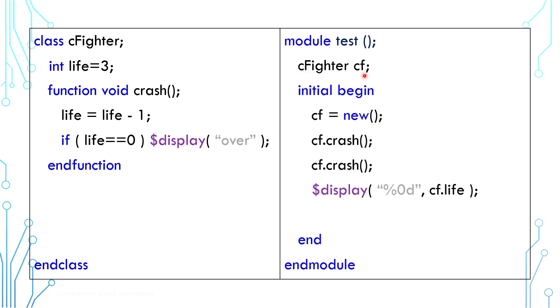We can test this class by instantiating it inside the module. We can call its function Crash, and then we can display its life. Well, the code works fine, but there's a loophole.